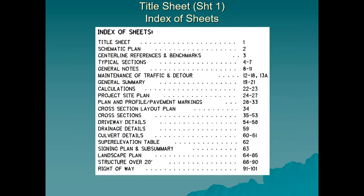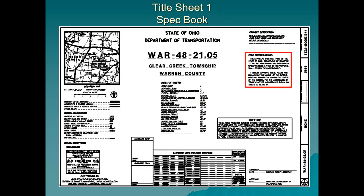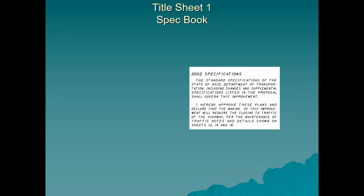In the middle of the title sheet is what we call the Index of Sheets — all the different sheet types in a set of construction plans. Today I'll cover the title sheet, typical sections, a small portion of general notes, plan and profile sheets, and cross-section sheets. Thursday is when I get into the right-of-way plan sheets. Also in the upper right-hand corner is the specifications reference — what year of spec book the project engineer or inspector is supposed to use during construction.